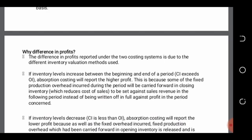The difference in profits under the two costing systems is due to the different inventory valuation methods: the marginal costing system values inventory using only variable production cost, while the absorption costing system values inventory using both variable and fixed production costs. So if inventory levels increase between the beginning and the end of the period — that is, if closing inventory exceeds opening inventory —